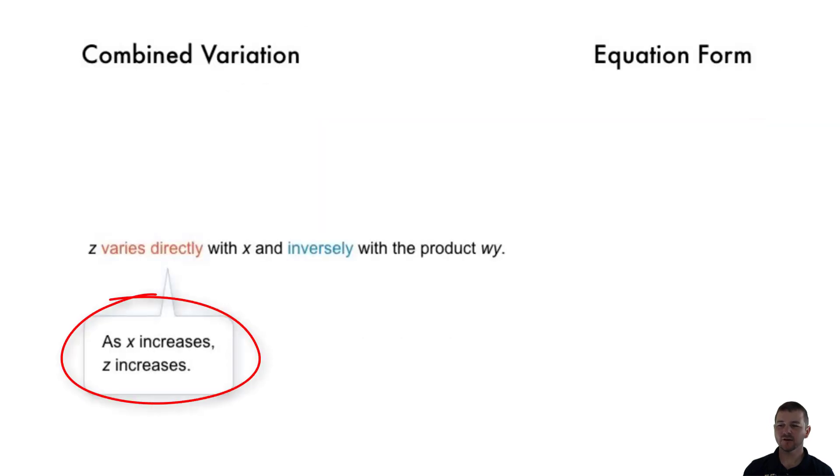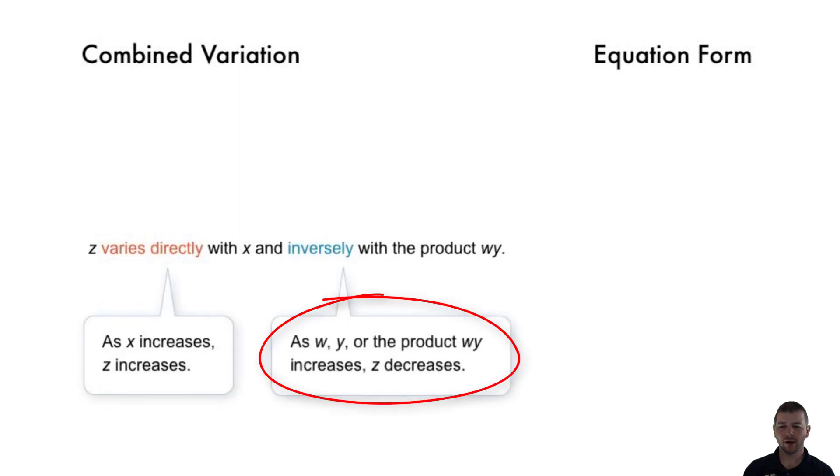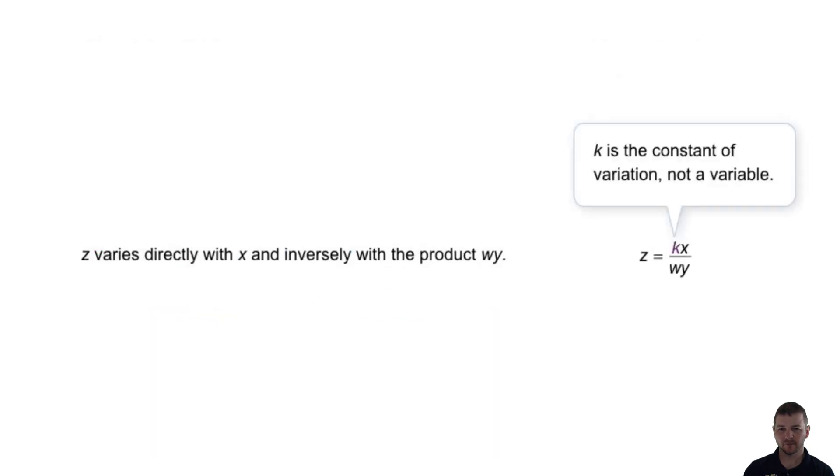So in this case, as x increases, z increases. And as w, or y, or the product w times y increases, z decreases. Once more, it should be noted that k is the constant of variation, not a variable.